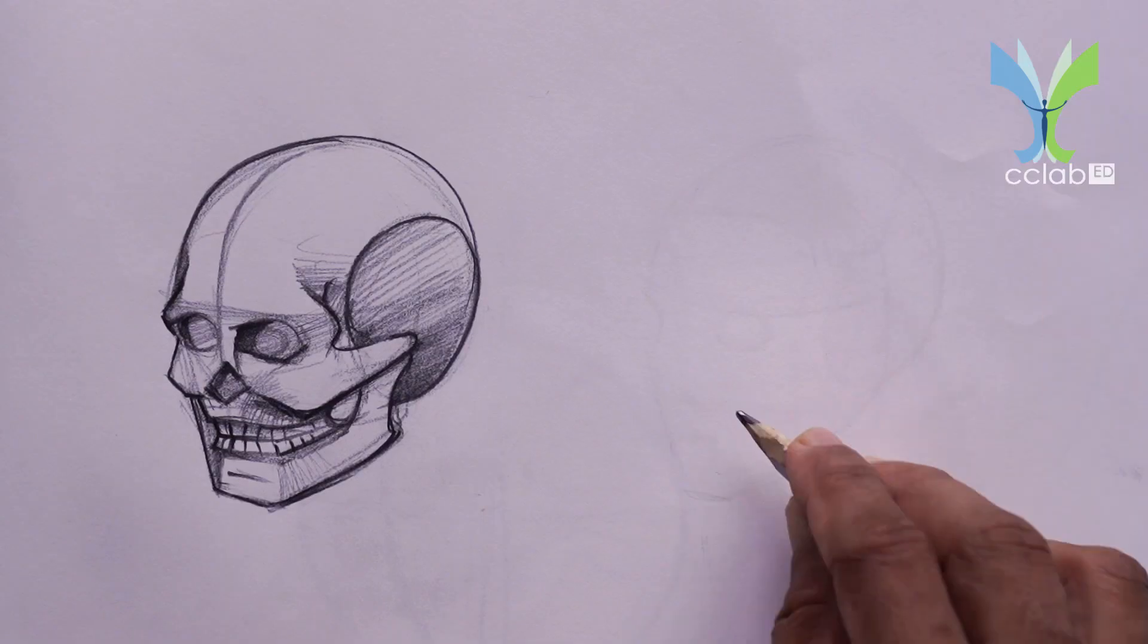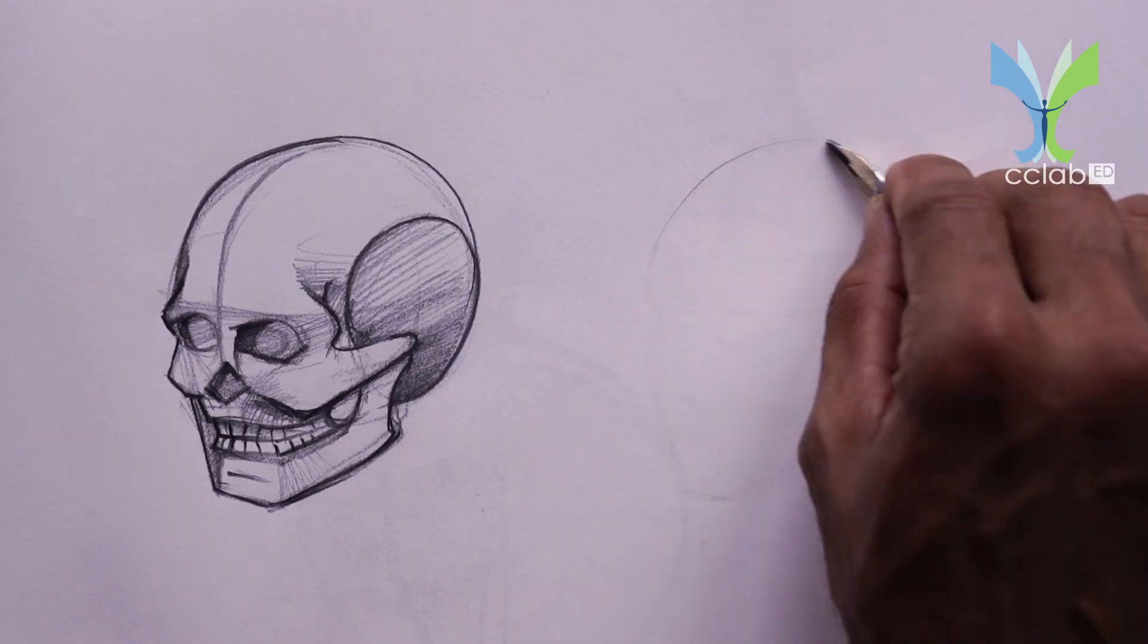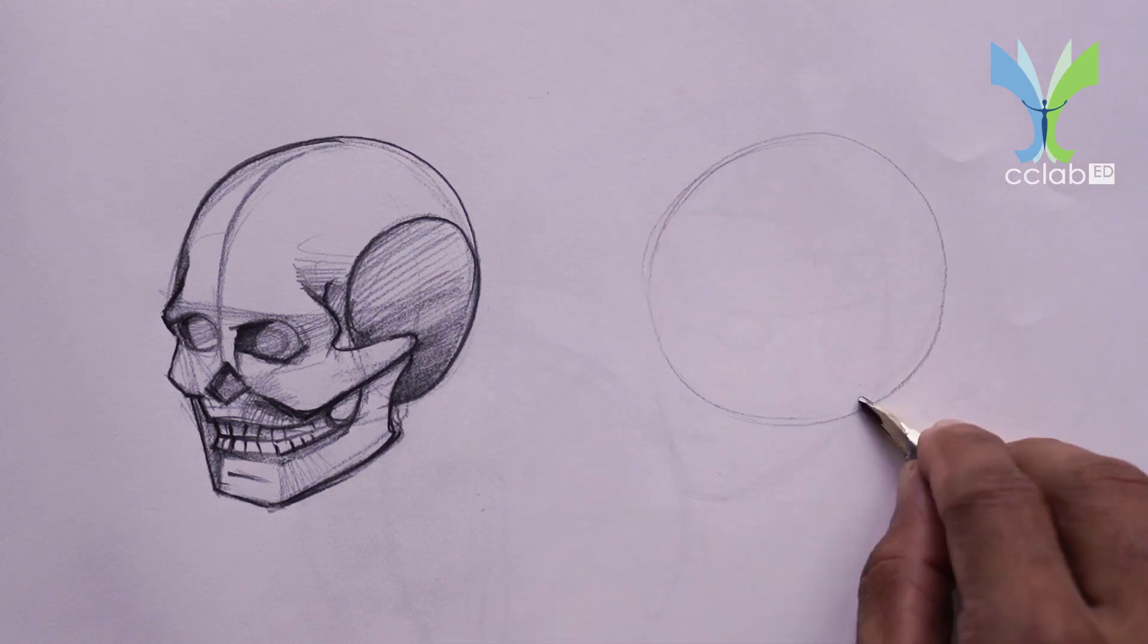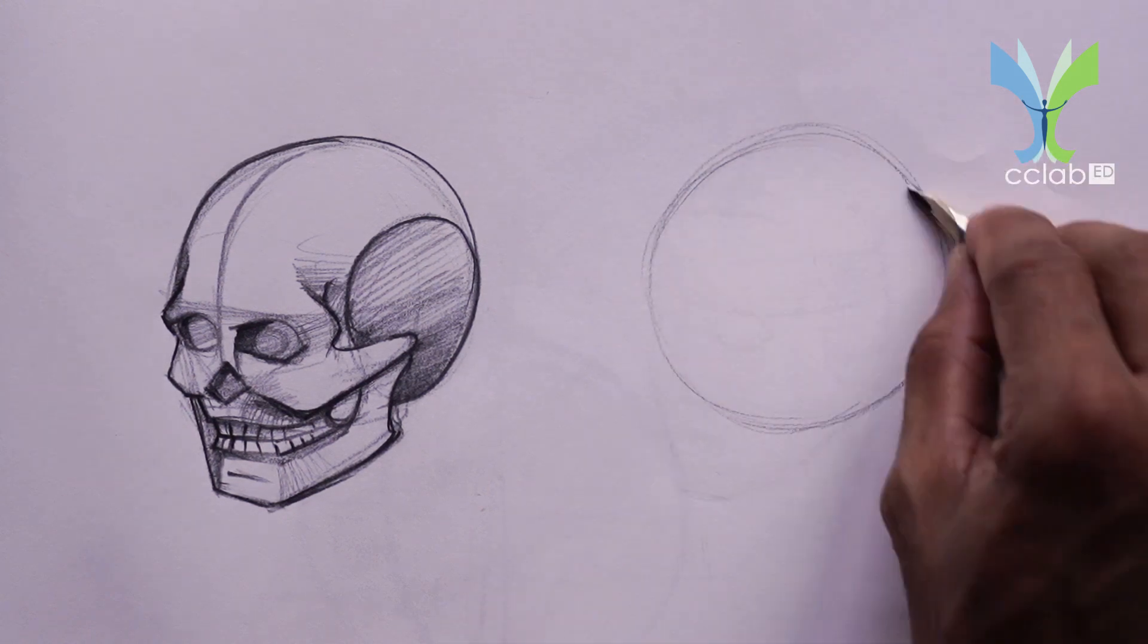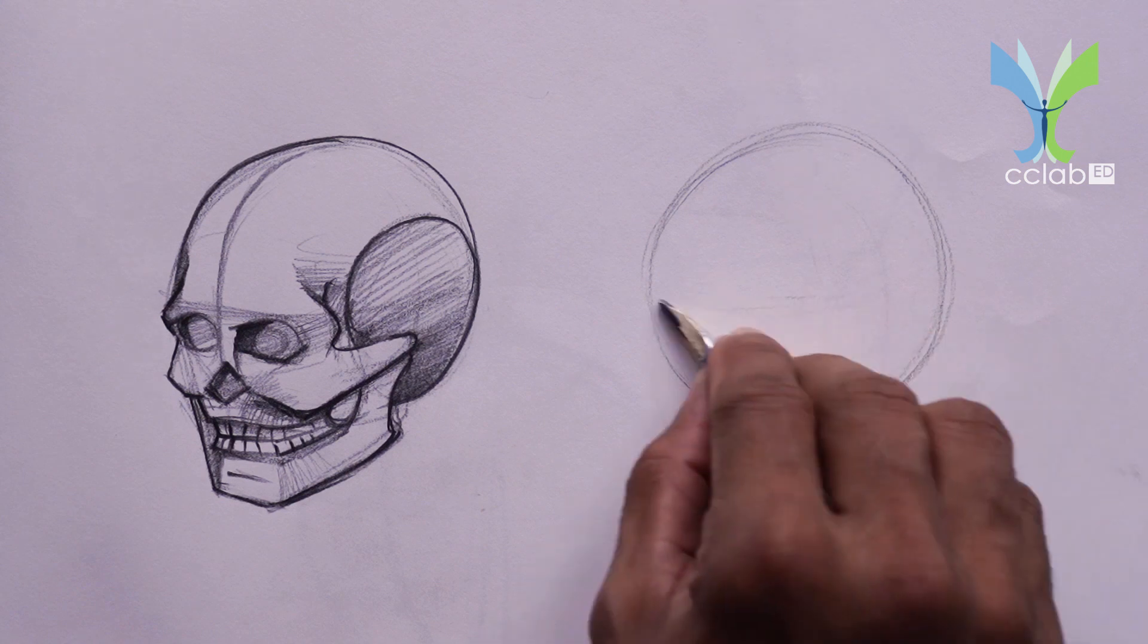Today's class is based on Andrew Loomis drawing the head and hands. Follow the class. First of all, to understand the basic structure of the head very deeply, then add the individual characteristics to the basic structure.